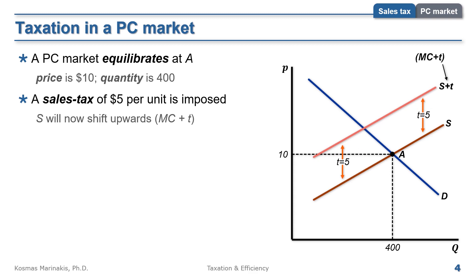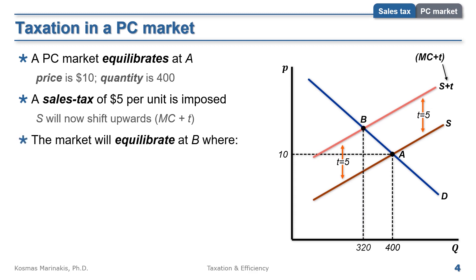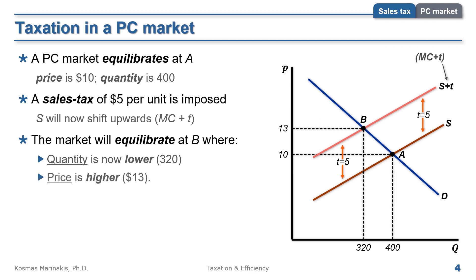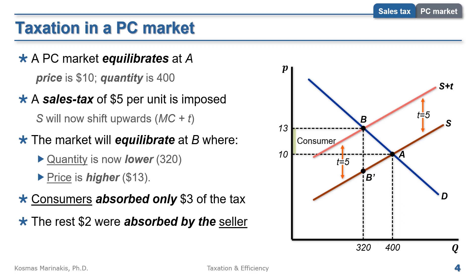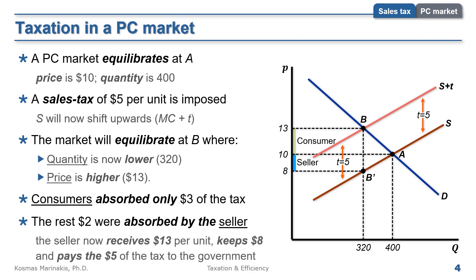This will cause the market to equilibrate at B, where quantity is now lower — 320 units — but price is higher at $13. Notice that the price consumers used to pay was $10 and after the tax it became $13, so the $5 tax increased the price by only $3. Yet the seller is still responsible to pay $5 tax to the government. Thus, the remaining $2 will be paid from the seller's pocket, who receives $13 per sale, keeps $8, and pays the other $5 to the government.